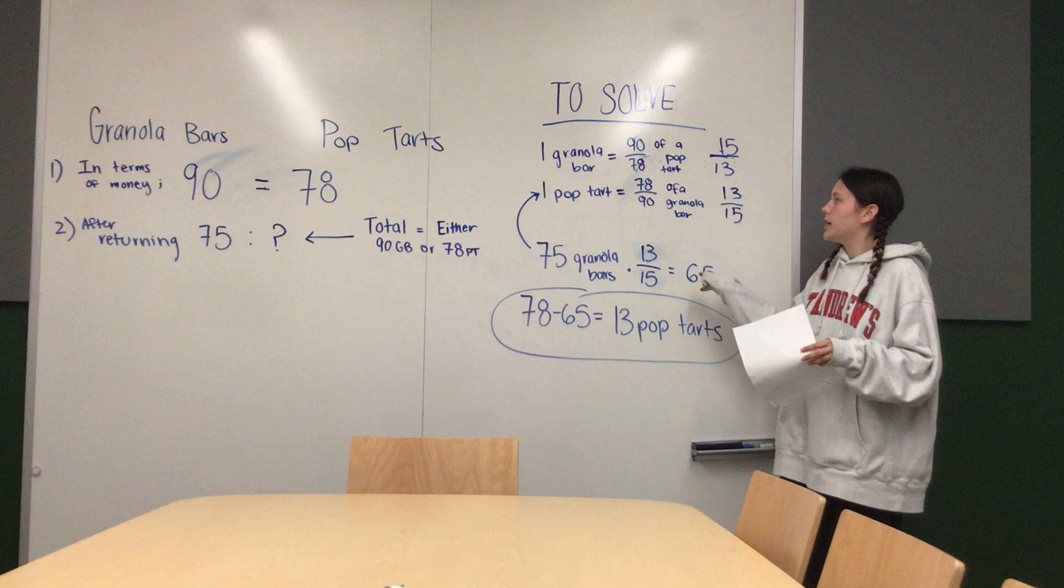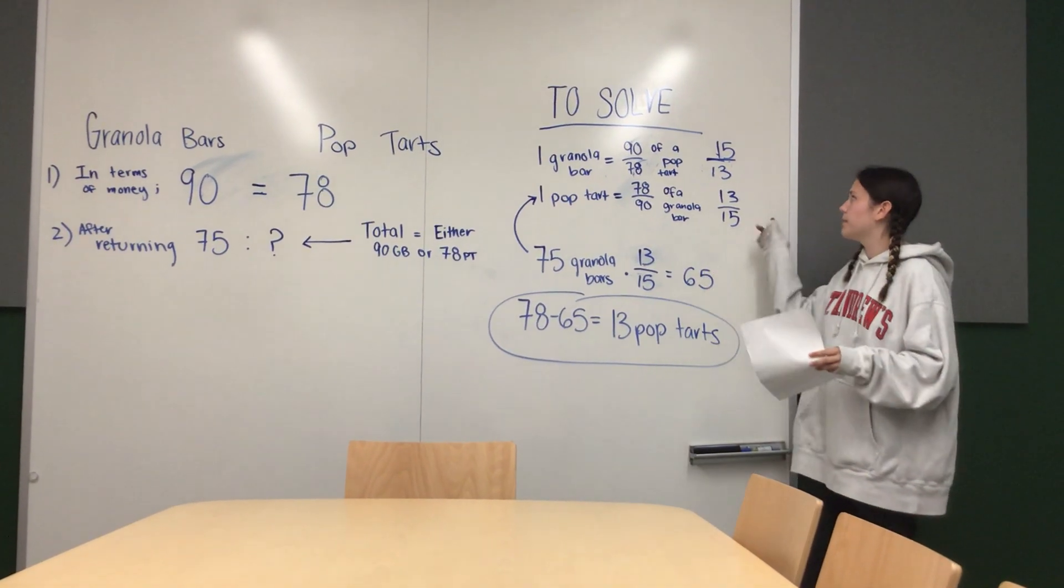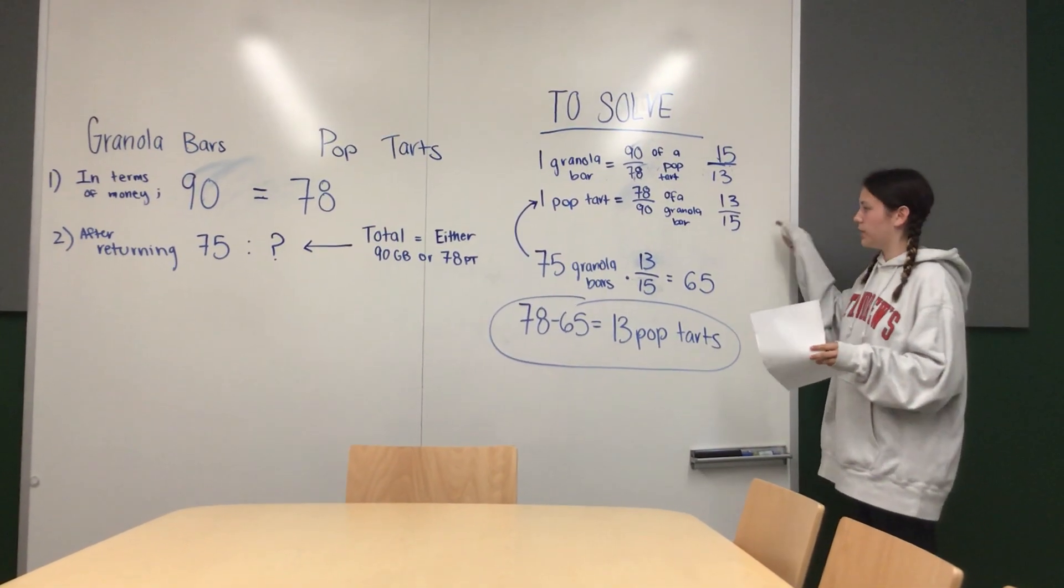And then one Pop-Tart is equal to 78/90ths of a granola bar, which simplified turns into 13/15ths.